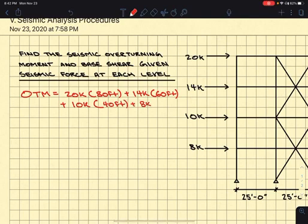Plus 8 kips times 20 foot. And calculating that out, that's going to equal 3,000 kip-foot. And there's your answer for overturning moment.